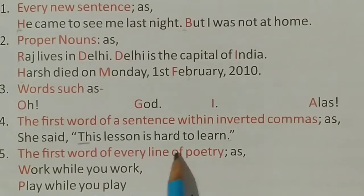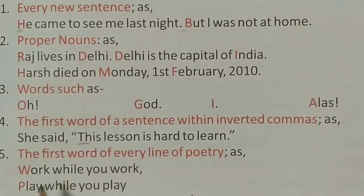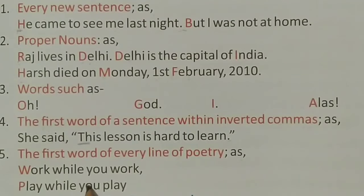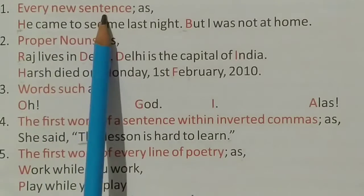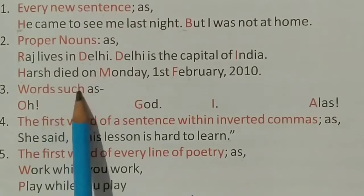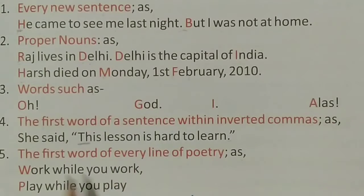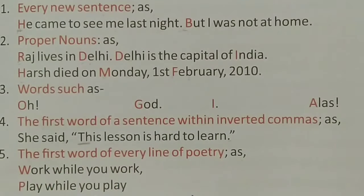The fifth rule is: the first word of every line of poetry always starts with a capital letter. For example: 'Work while you work, play while you play.' Here both W and P are capital. So there are five points where we use capital letters: every new sentence, proper nouns, words like Oh/God/I/Allah, first word of a sentence within inverted commas, and the first word of every line of poetry.